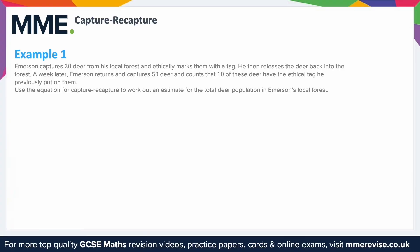Example 1. Emerson captures 20 deer from his local forest and ethically marks them with a tag. He then releases the deer back into the forest. A week later, Emerson returns and captures 50 deer and counts that 10 of these deer have the ethical tag he previously put on them. Use the equation for capture-recapture to work out an estimate for the total deer population in Emerson's local forest.